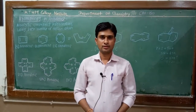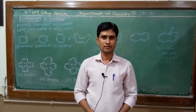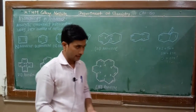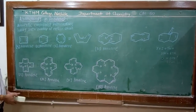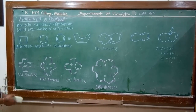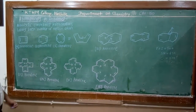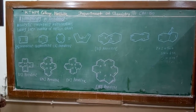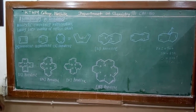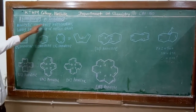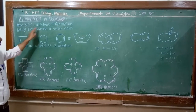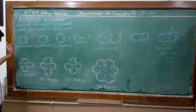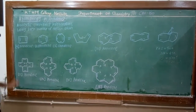In today's lecture we are discussing aromaticity in annulins. Annulins are conjugated hydrocarbons which are monocyclic and having an even number of carbon atoms. So annulins are monocyclic conjugated hydrocarbons having even number of carbon atoms, and these are the structures of annulin.